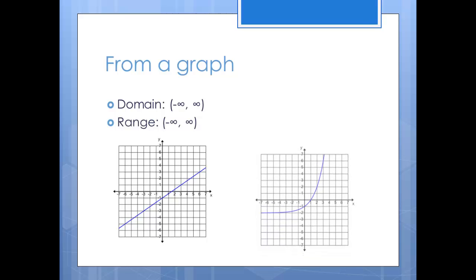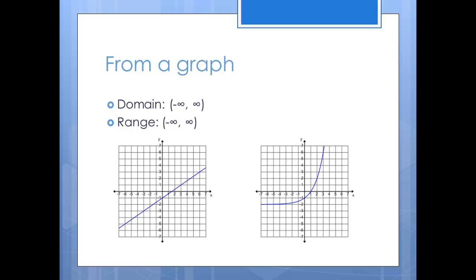Now look at this graph. This is an exponential function. Notice that on the right side, it will keep getting higher and higher. On the left side, however, it looks like the graph levels out. Let's see how that affects the domain and range.